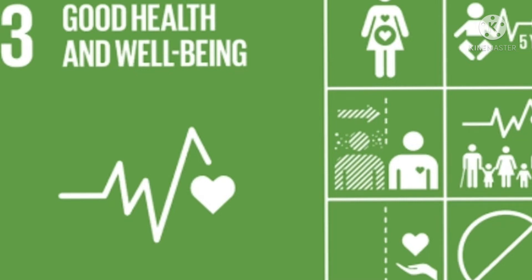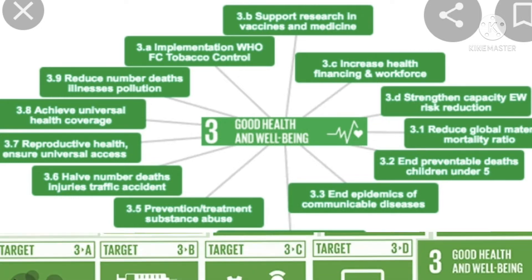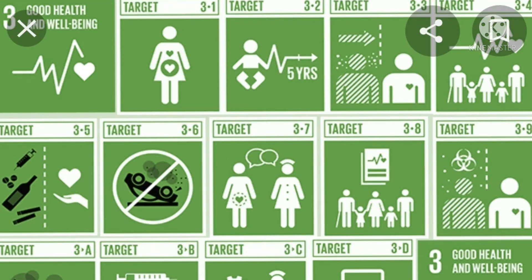SDG 3 has 13 targets and 28 indicators to measure progress towards targets. The first 9 targets are outcome targets.